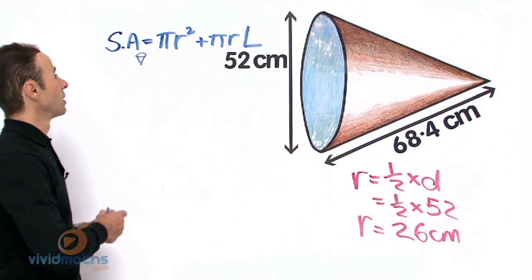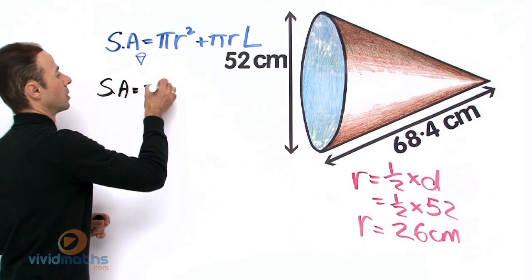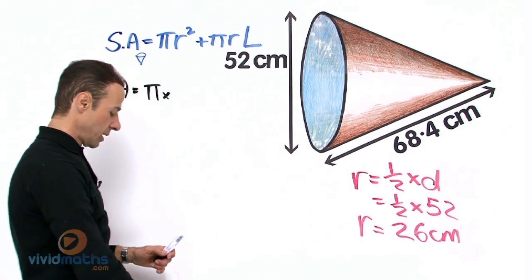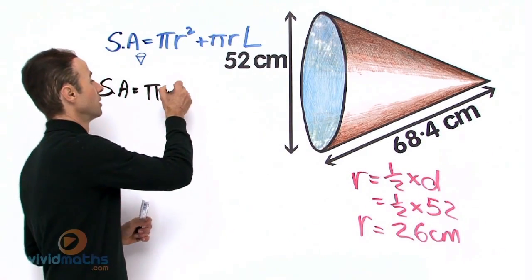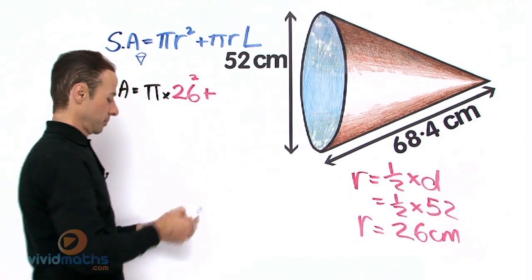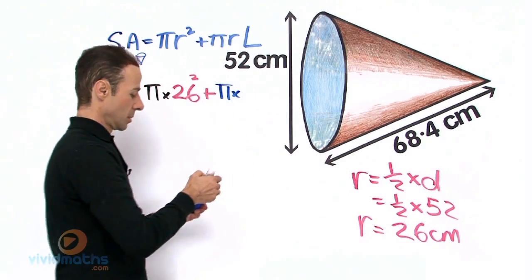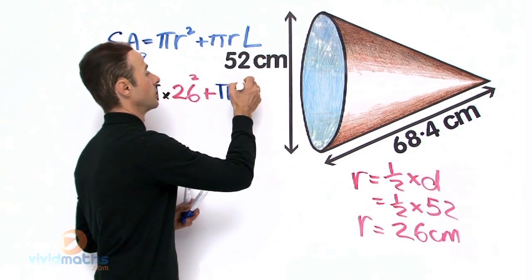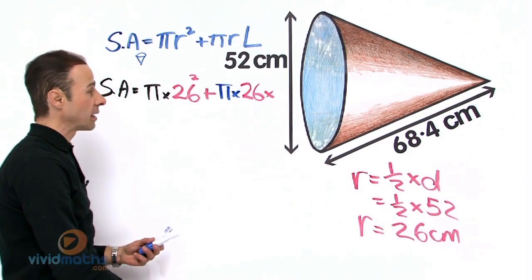Let's put in the radius, and that as we said before is 26 centimeters, so that will be 26 squared.